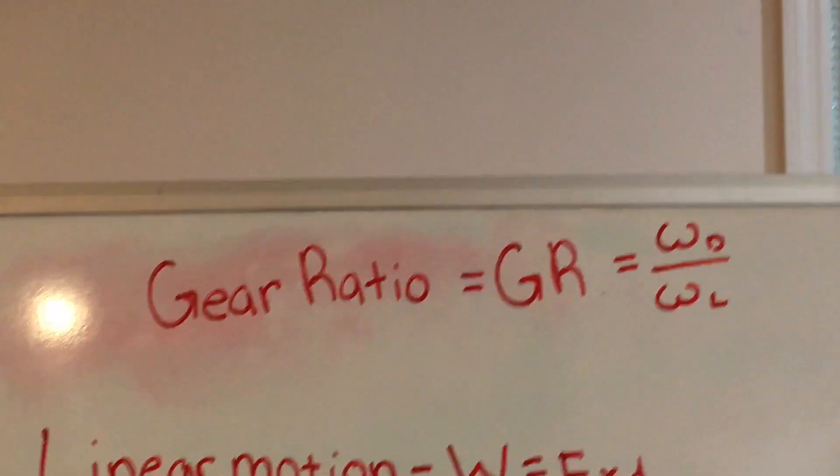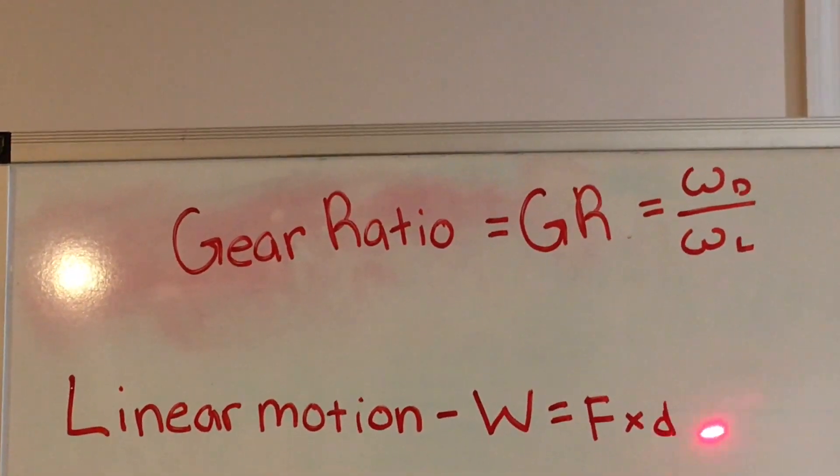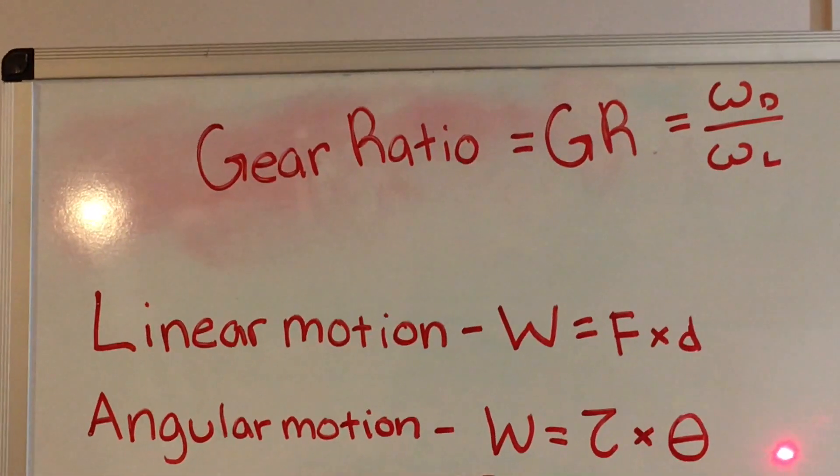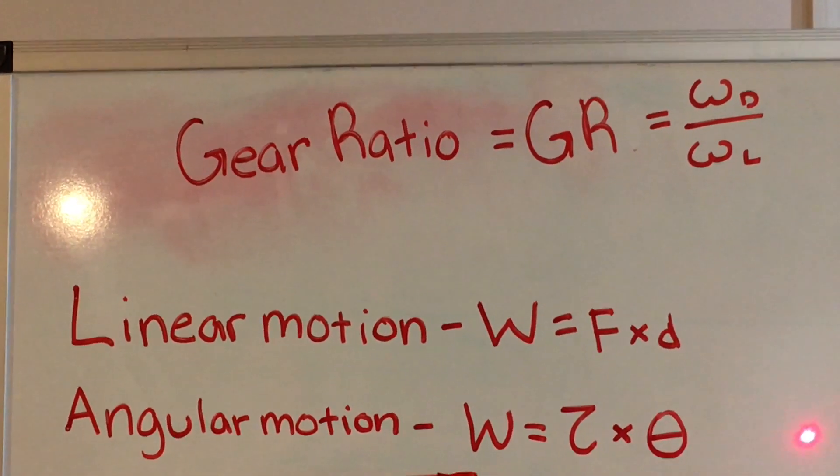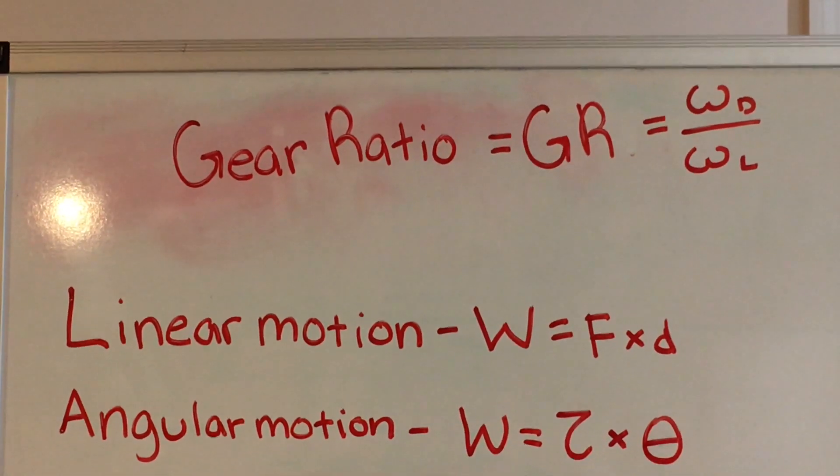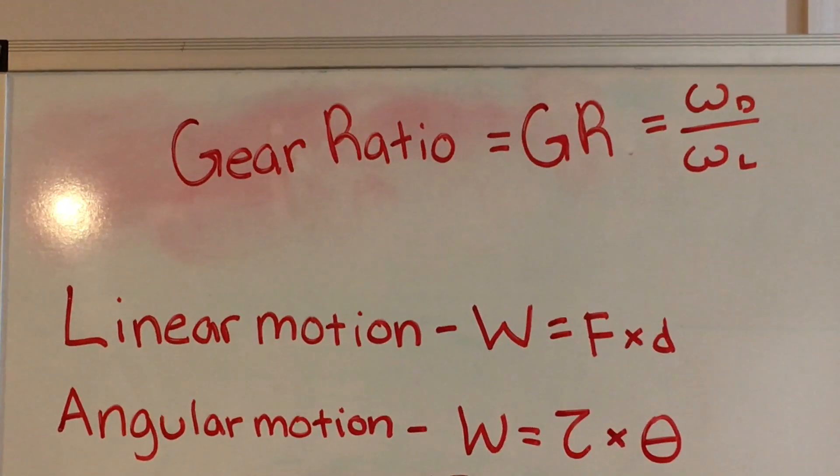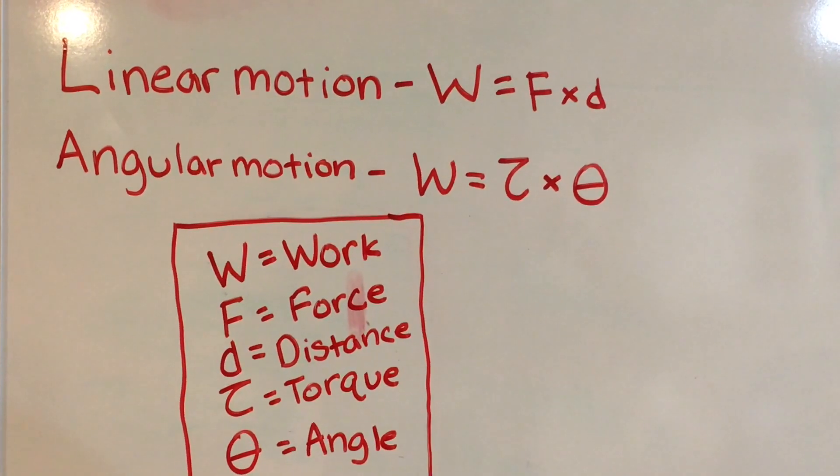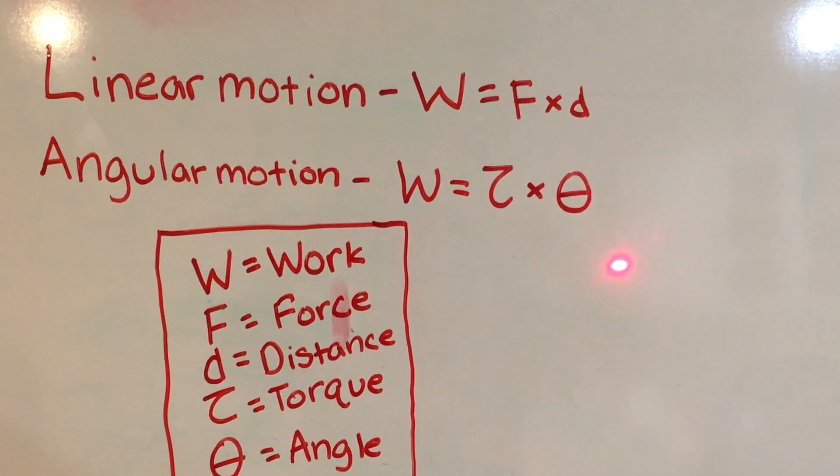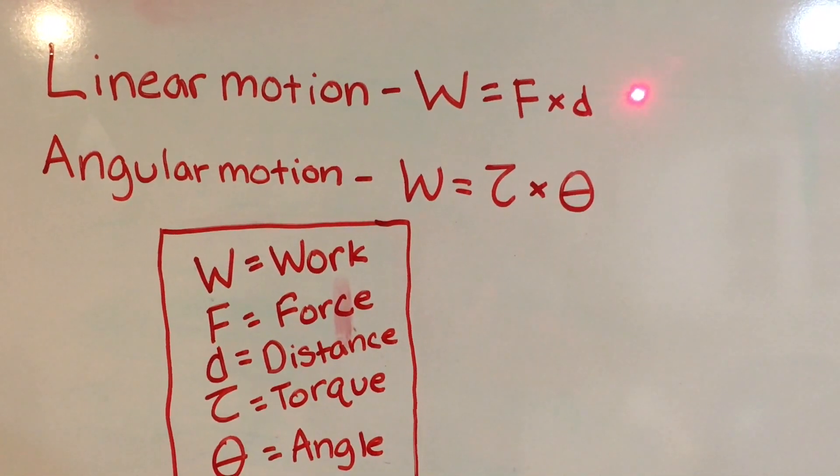In linear motion, work equals force times distance. In angular motion, work equals torque times angle. Torque is written as the Greek letter tau, and angle is written as the Greek letter theta. In angular motion, torque is the equivalent of force, and the angle covered is the equivalent of the distance covered.